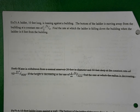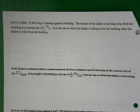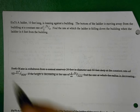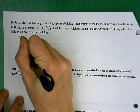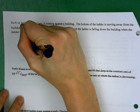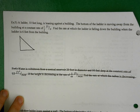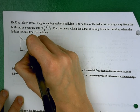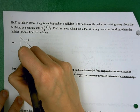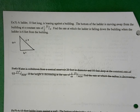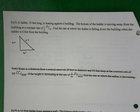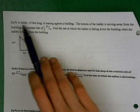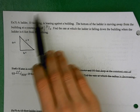Example five — we're going to put this in context. A ladder 10 feet long is leaning against a building. The bottom of the ladder is moving away from the building at a constant rate of one-half feet per second. Find the rate at which the ladder is falling down the building when the ladder is six feet from the building. We start with step one — draw a picture. Because this is a triangle, I'll label the sides A, B, and C.